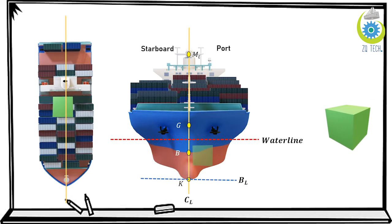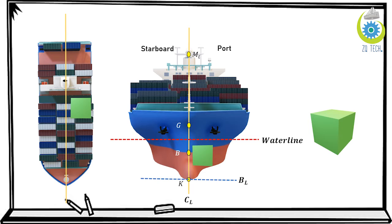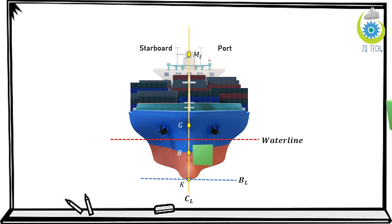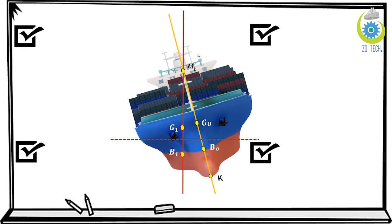Let's consider this green box, which is present at the bottom of the ship near the midship section. This could represent fuel, cargo, storage, or machinery. Let's consider that this amount of fuel is consumed — what will happen to the ship? The ship gets tilted towards the starboard side.